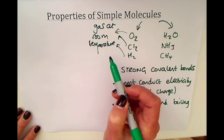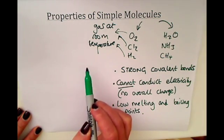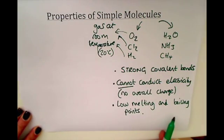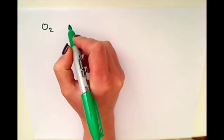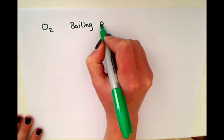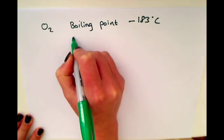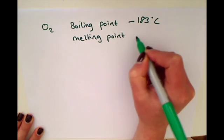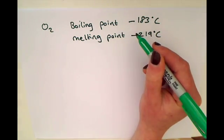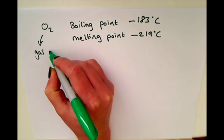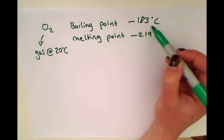If a substance is already a gas at room temperature — around 20°C — that helps us remember it has low melting and boiling points, because it must have boiled at a much lower temperature. Taking oxygen as an example: it has a boiling point of approximately −183°C and a melting point of approximately −219°C. These are really low melting and boiling points, which makes sense since oxygen is a gas at room temperature (approximately 20°C).